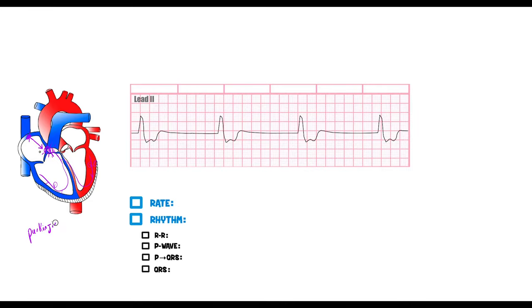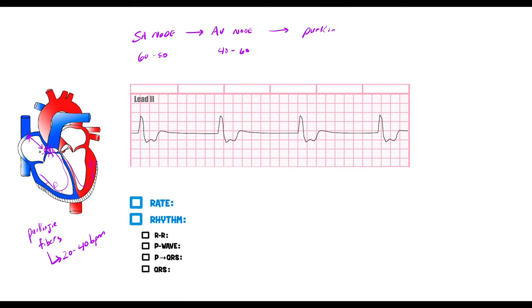When the AV node isn't working and the ventricles have to beat on their own, the Purkinje fibers take over at approximately 20 to 40 beats per minute. This rhythm is called an idioventricular rhythm. Remember the hierarchy: the SA node fires at 60 to 80 bpm, the AV node at 40 to 60 bpm, and the Purkinje system at 20 to 40 bpm.